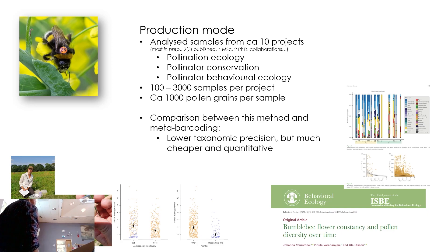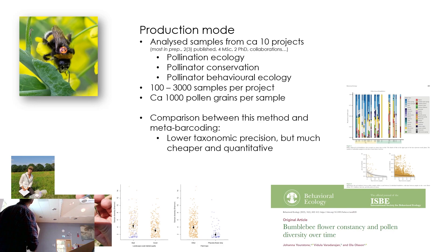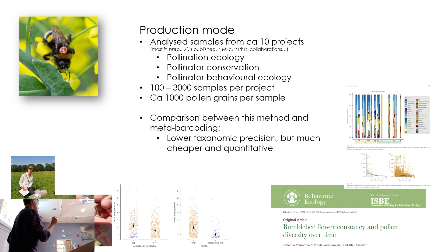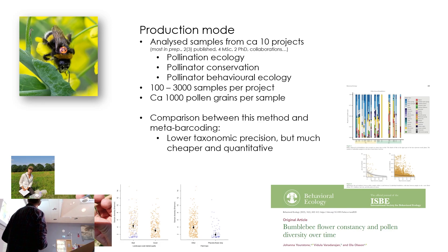We're more or less in production mode now. We've run quite a few projects, with a couple of papers published and master's student theses. Usually we do somewhere between 100 and 3,000 samples in a project, on average about 1,000 pollen grains per sample — big masses of pollen grains. We have an ongoing project comparing this model with metabarcoding, and the congruence is really good — they identify basically the same things. Metabarcoding can usually go down to species and we often can't, but on the other hand metabarcoding isn't quantitative to the same extent, and we are much cheaper.